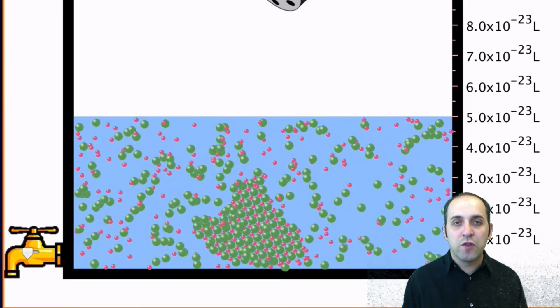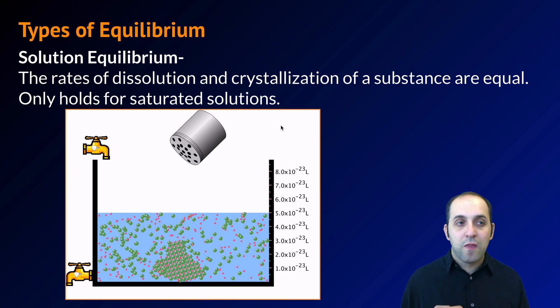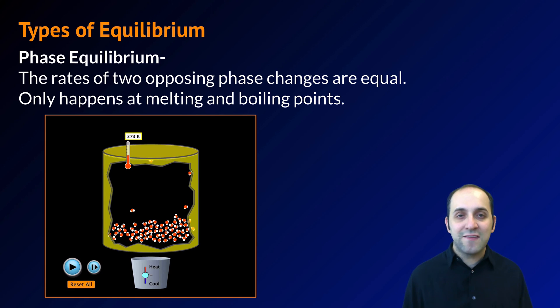If we go and we look at the border of that crystal, you can see that the rate of the ions entering the solution is equal to the rate of the ions leaving the solution. That's a solution equilibrium. It only works at a saturated solution where you have both crystals and dissolved ions together in the system.